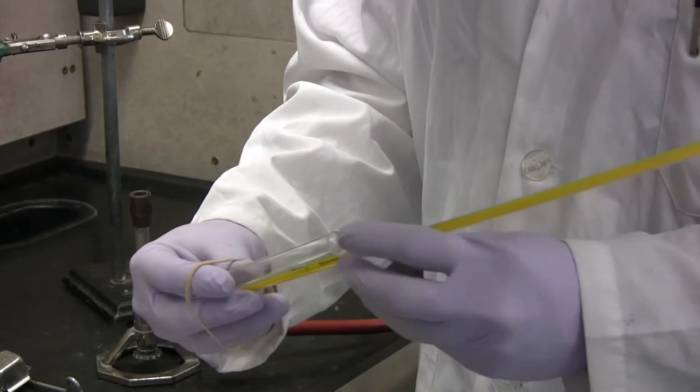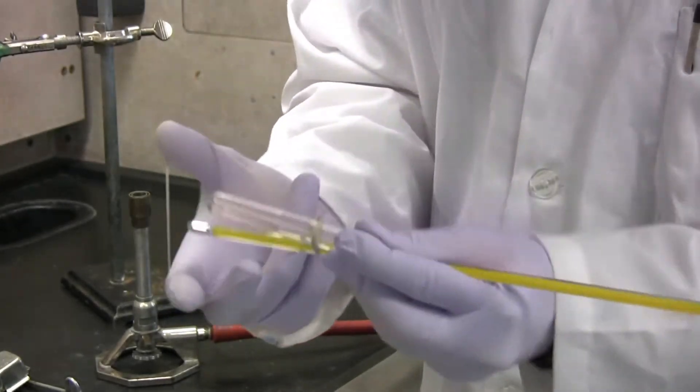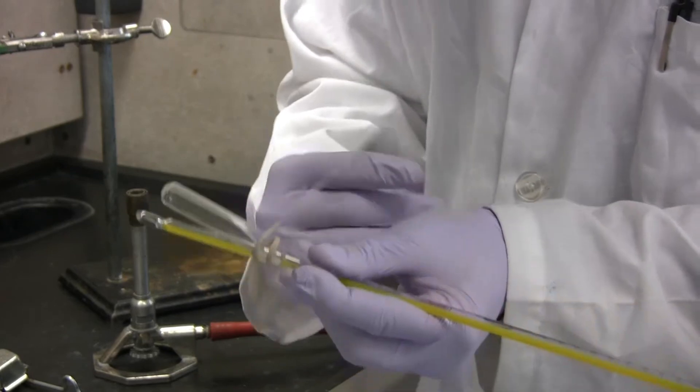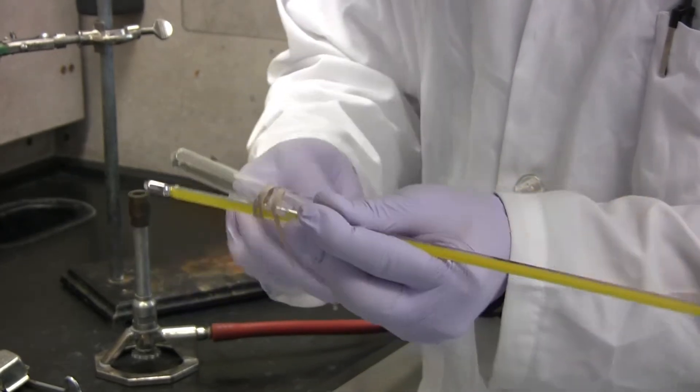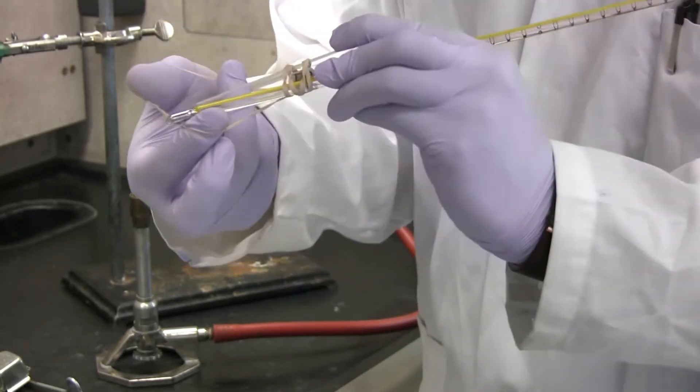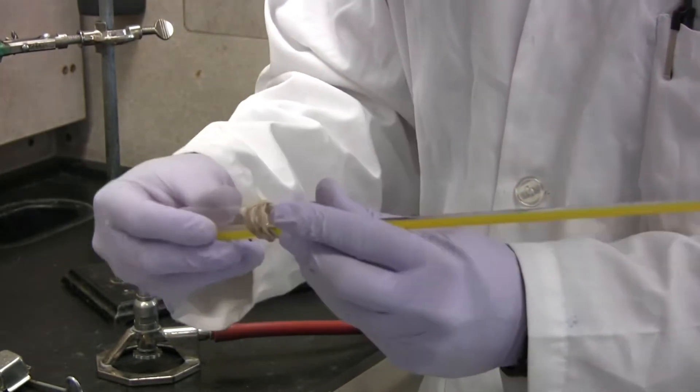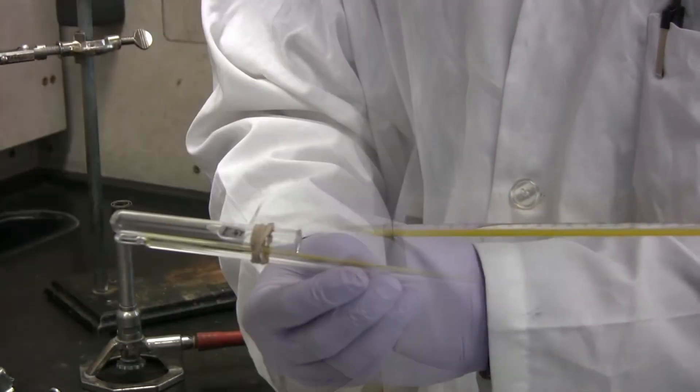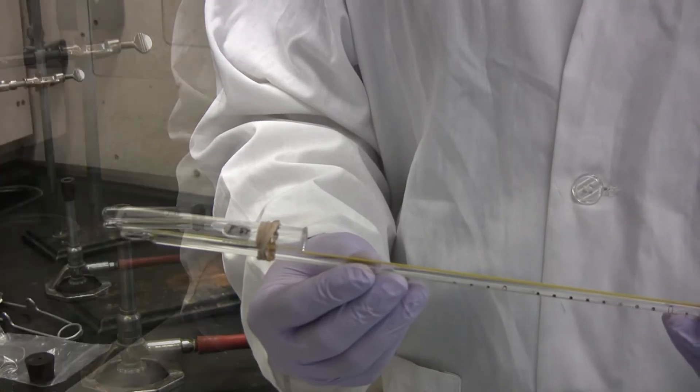Attach the small test tube to the mercury thermometer using a rubber band. Ensure the bottom of the test tube and the bottom of the mercury thermometer are lined up. Place the rubber band near the top of the small test tube.